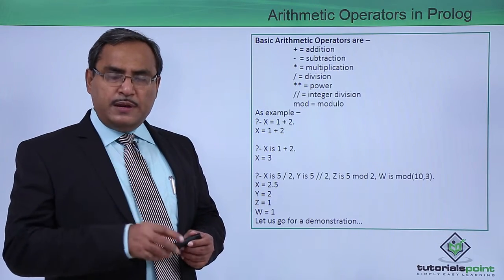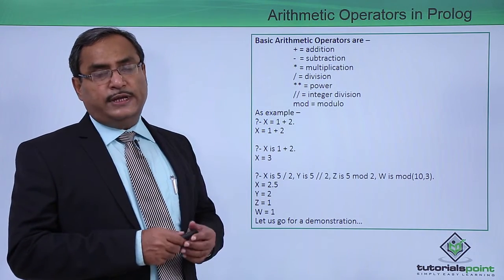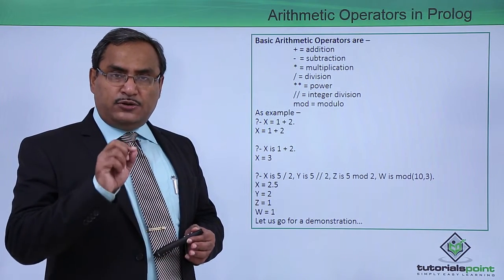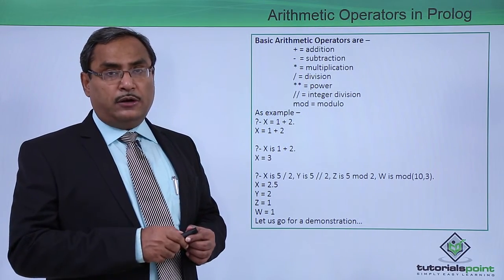A double star b means a to the power of b in this case. And here slash slash denotes integer division, that means it will take only the integer part of the quotient and the fractional part will be discarded.